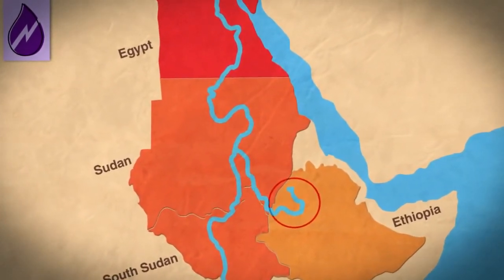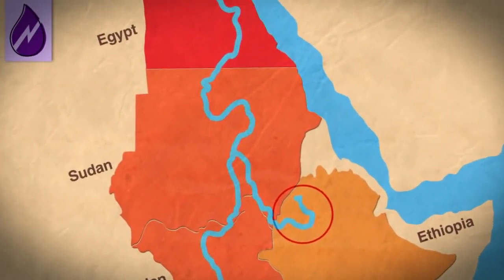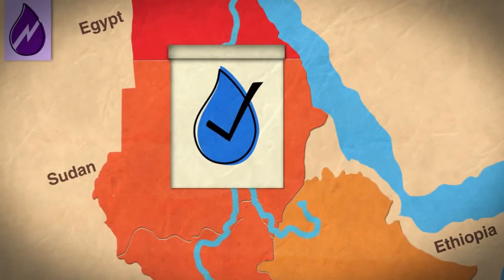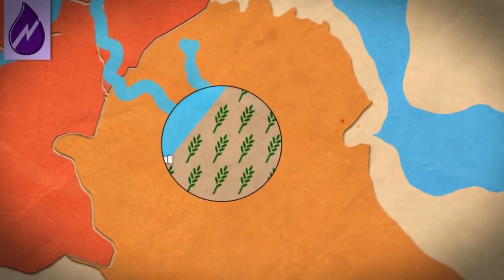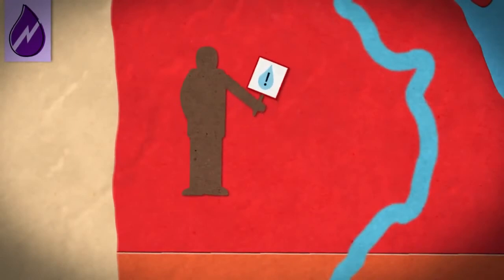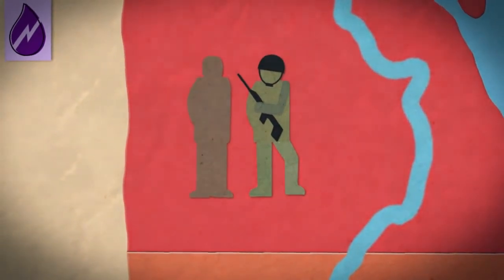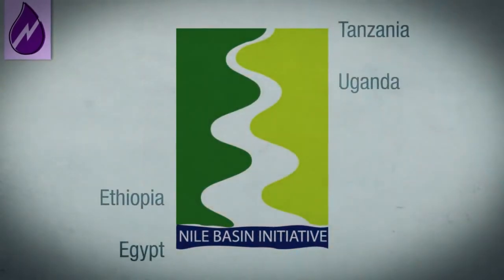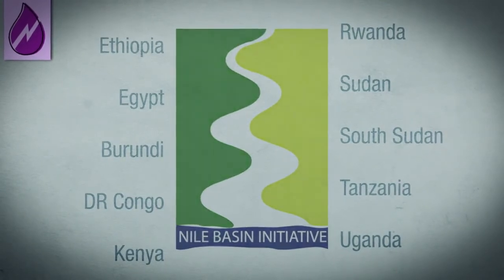The majority of the Nile water comes from the Blue Nile, which originates in Ethiopia. An old agreement from the colonial period allows Egypt and Sudan the use of most of the Nile's water. Ethiopia, a poor country with regular famines, wants to build an agricultural irrigation system. Egypt fears a decrease of Nile water and tries to prevent Ethiopia from doing so, even with military threats. However, the example also shows opportunities for international cooperation — the countries along the river have formed the Nile Basin Initiative to organize the use of its water without conflict.